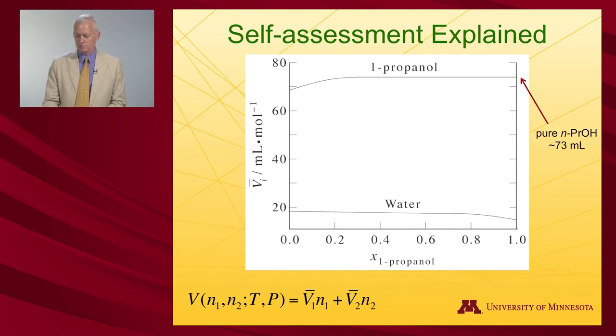So pure n-propanol over here looks like it has a volume of about, call that 73 milliliters. Pure water on the other hand, over at the left hand side, about 18 milliliters. If I go to the indicated mixture, which was 0.9 of one quantity and 0.1, so 0.9 water and 0.1 mole fraction of propanol, I would read this off and plug it into this equation as 0.9. That is the number of moles of water times the partial molar volume. It doesn't look like it's changed much, about 18.